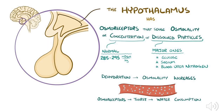As you can see, the hypothalamus has osmoreceptors which sense osmolality — basically the concentration of dissolved particles, the major ones being glucose, sodium, and blood urea nitrogen. When you're dehydrated or there's a depletion of bodily fluids, osmolality increases. The osmoreceptors detect this and, through the thirst mechanism, increase water consumption as well as stimulate the release of ADH into the bloodstream.